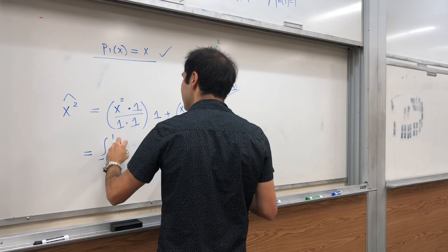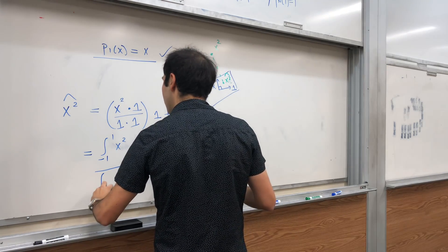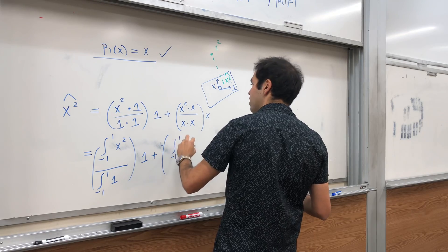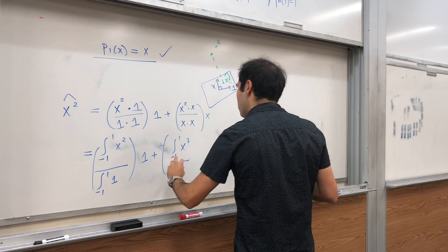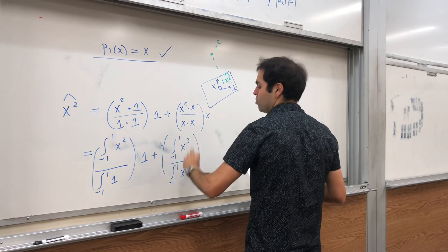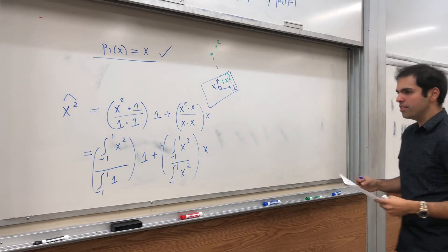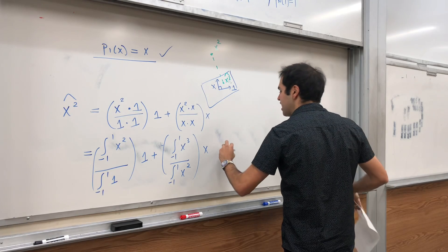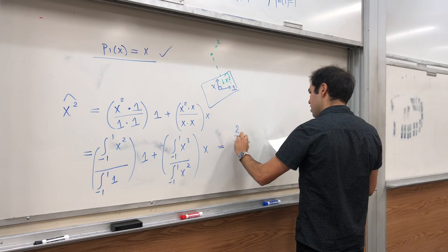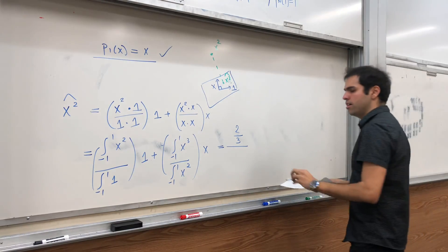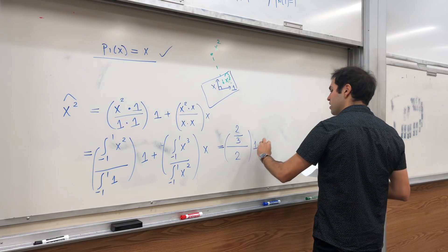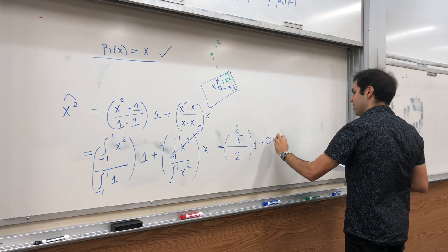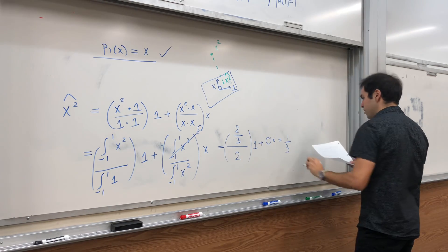And remember, dot just means integral. So integral from minus 1 to 1 of x squared, divided by the integral from minus 1 to 1 of 1 squared, times 1, plus the integral from minus 1 to 1 of x squared times x, which is x cubed. And you evaluate those integrals, so an antiderivative is x cubed over 3. And then from minus 1 to 1, it actually gives you 2 thirds. Integral from minus 1 to 1 of 1 is 2. So this thing times 1, and then the nice thing is x cubed is an odd function, so this integral is just 0. So it's just 0x, and that just becomes 1 third.